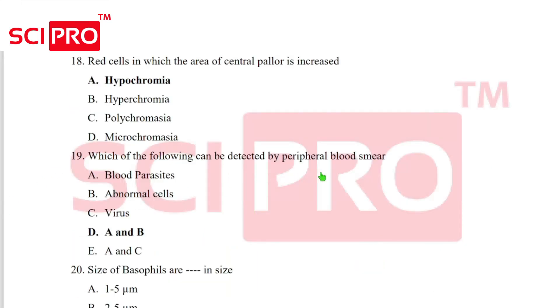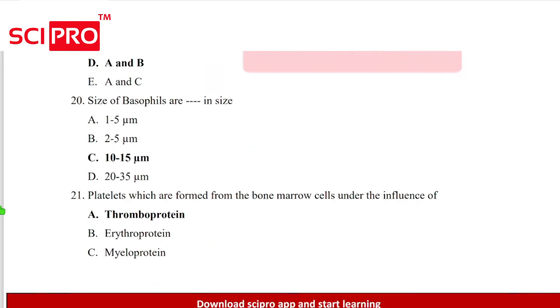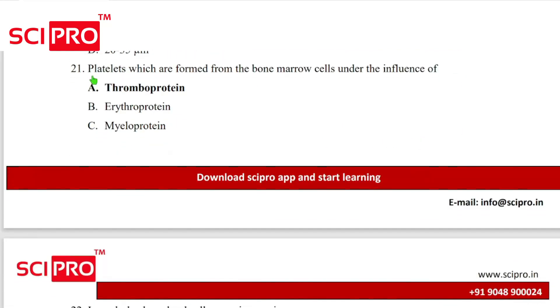Question number 19, which of the following can be detected by peripheral blood smear? Blood parasite and abnormal cells. Question 20, the size of basophils, 10 to 15 micron. Question number 21, platelets which are formed from the bone marrow cells under the influence of thrombopoietin.